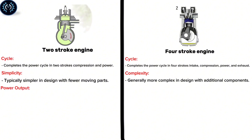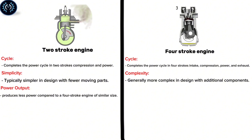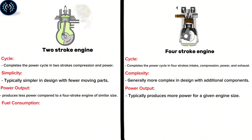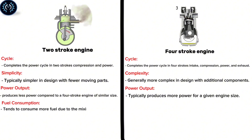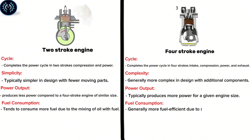Power output – the two-stroke engine produces less power compared to a four-stroke engine of similar size. The four-stroke typically produces more power for a given engine size. Fuel consumption – the two-stroke tends to consume more fuel due to the mixing of oil with fuel, while the four-stroke is generally more fuel efficient due to separate oil lubrication.